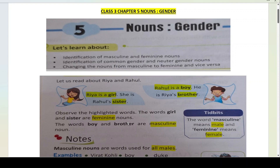Now let us see — nouns stand for any name, place, animal, or thing. In this chapter, we are reading that persons are in two genders. The girl category and the female category are called feminine nouns. Boys are divided into masculine nouns. So here, 'girl' and 'sister' are feminine nouns, and 'boy' and 'brother' are masculine nouns.